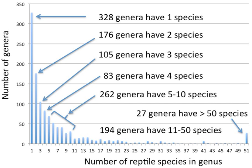Monophylly: all descendants of an ancestral taxon are grouped together, i.e., phylogenetic analysis should clearly demonstrate both monophylly and validity as a separate lineage. Reasonable compactness: a genus should not be expanded needlessly.